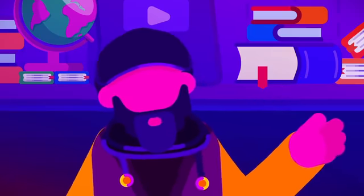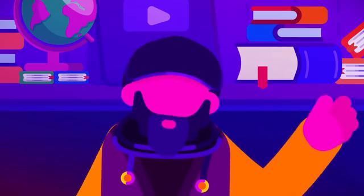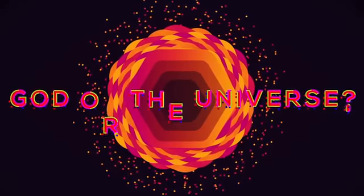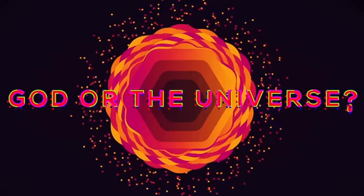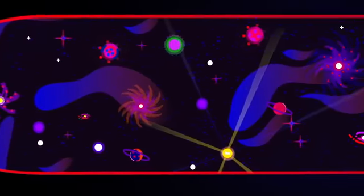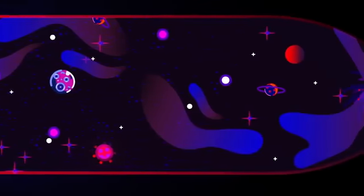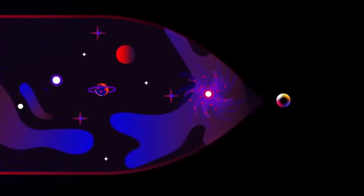What we're essentially saying is that something must have always existed. Now there are two obvious choices, God or the universe. Since the universe began and is contingent, it cannot have always been there. Therefore something that always existed must be God.